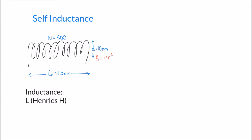Because our coil has an inductance it's able to build up magnetic energy, and we can calculate that energy using the formula: E equals L times I squared over 2 — that's the inductance multiplied by the current squared, divided by two.